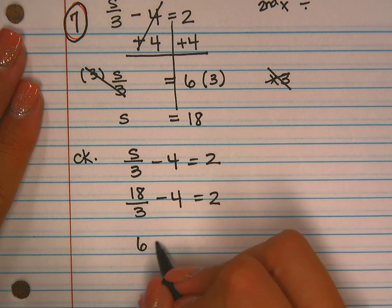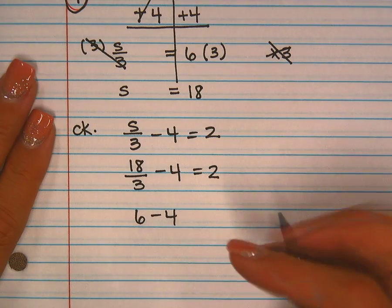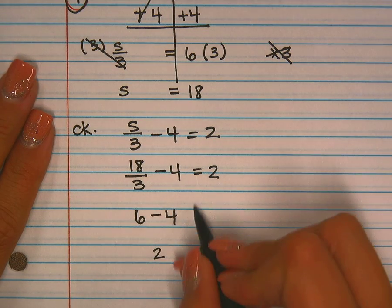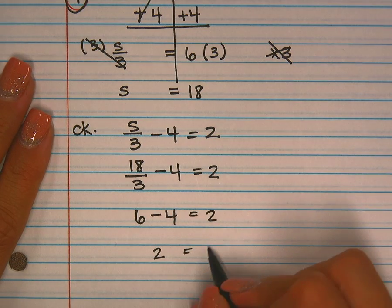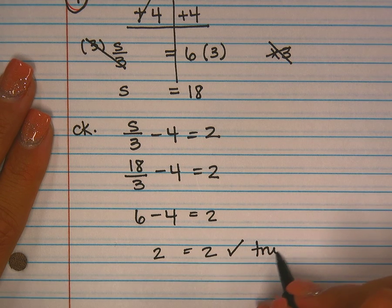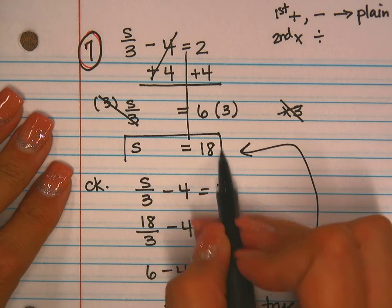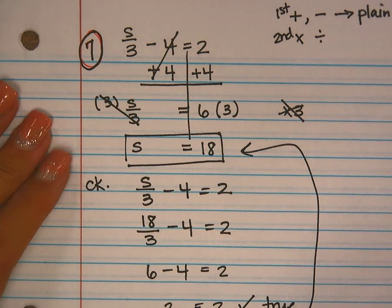Bring down the minus four. What is six minus four? Two. Bring down that equal sign and that two. Does two equal two? Yes, because that's a true statement. That means this is the correct answer for number seven, so I would box, circle, or highlight that.